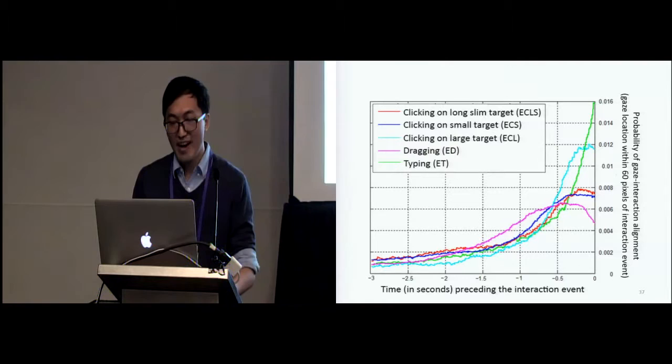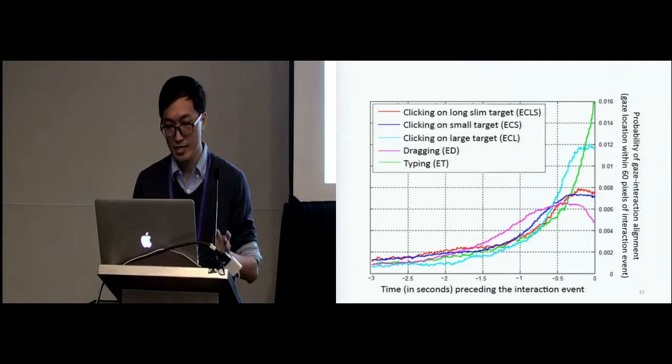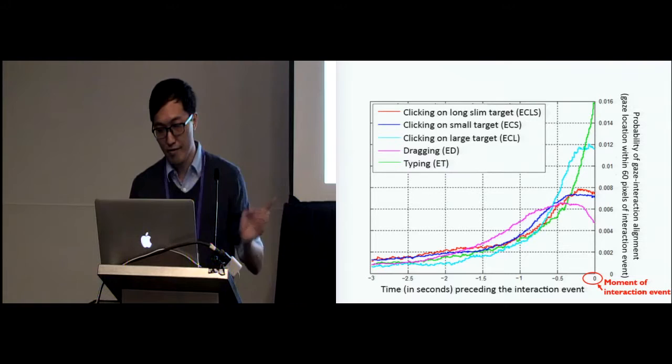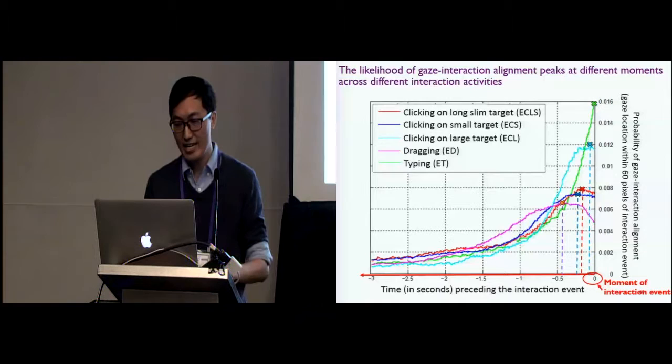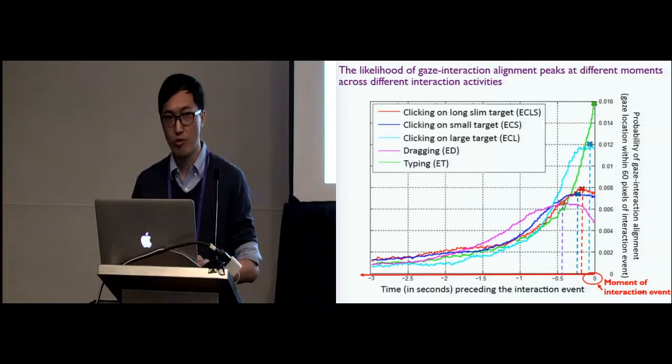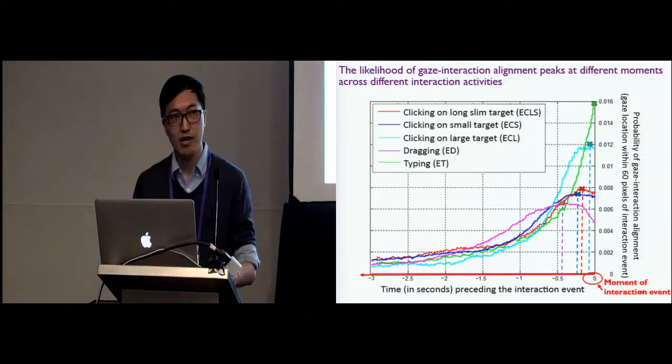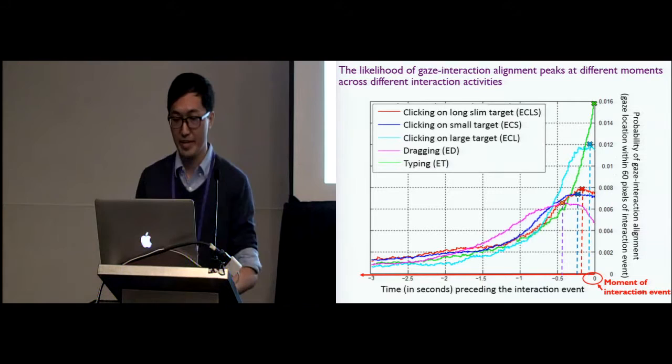What we want to find is the probability of the distance between the gaze and interaction location, that is less than 60 pixels, which means they are well aligned. So this is the moment of the interaction happens. The X axis shows the time in seconds preceding the event. And we can see that the likelihood of the gaze interaction alignment peaks at different moments across different activities. This means that the user is not always looking at where they click or type. But this is only the overall probability mass function.